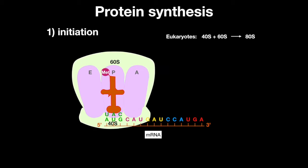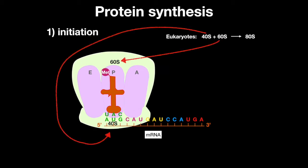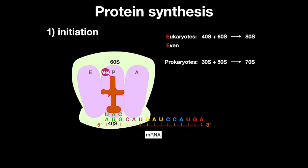In eukaryotes, the ribosome is built from 40S and 60S subunits that make up the 80S ribosome, and in prokaryotes, the subunits are 30S and 50S to make the 70S ribosome. Eukaryotes have an even ribosome, and prokaryotes have a prime ribosome. In both, proteins are synthesized from the N to C terminus.